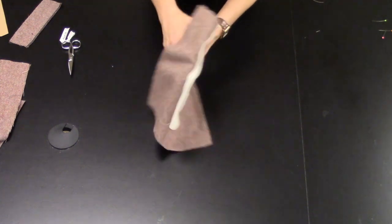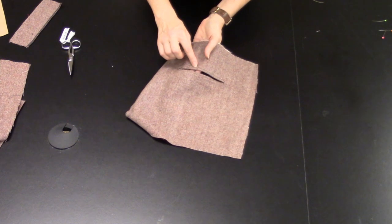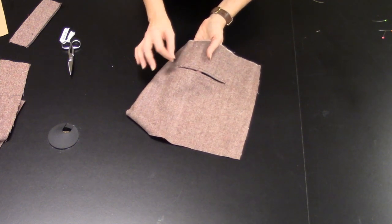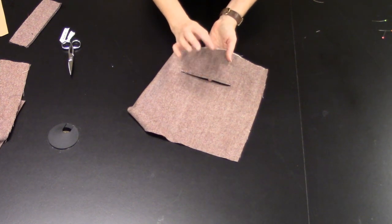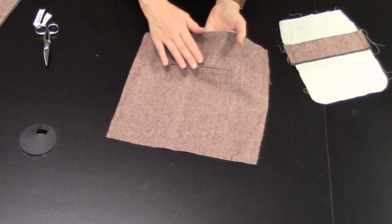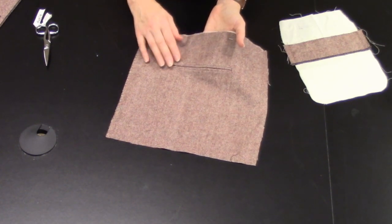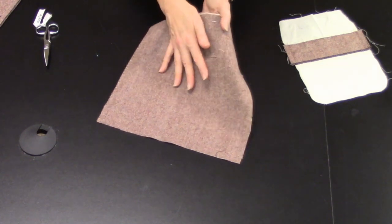Once you have those welts symmetrical top and bottom, pin them. Then with a single thread hand sewing just stitch in the ditch to hold those welts perfectly in place while you finish the pocket. Once you have those welts hand basted in place so that they don't change their width as you finish the pocket.